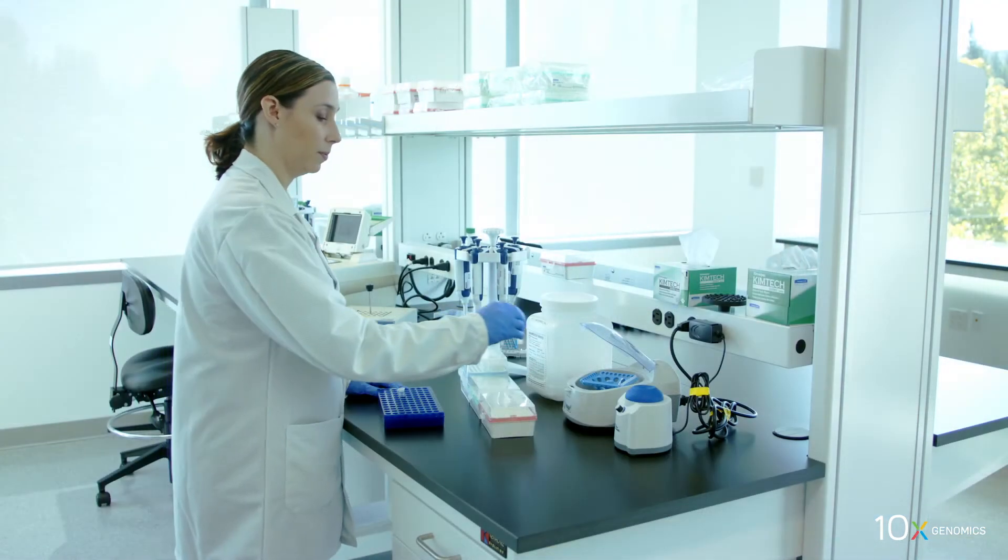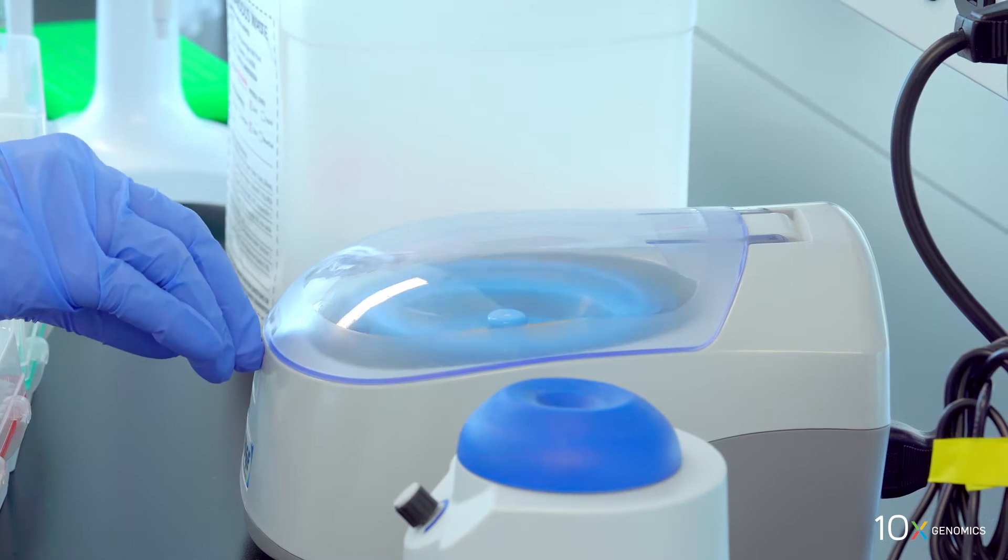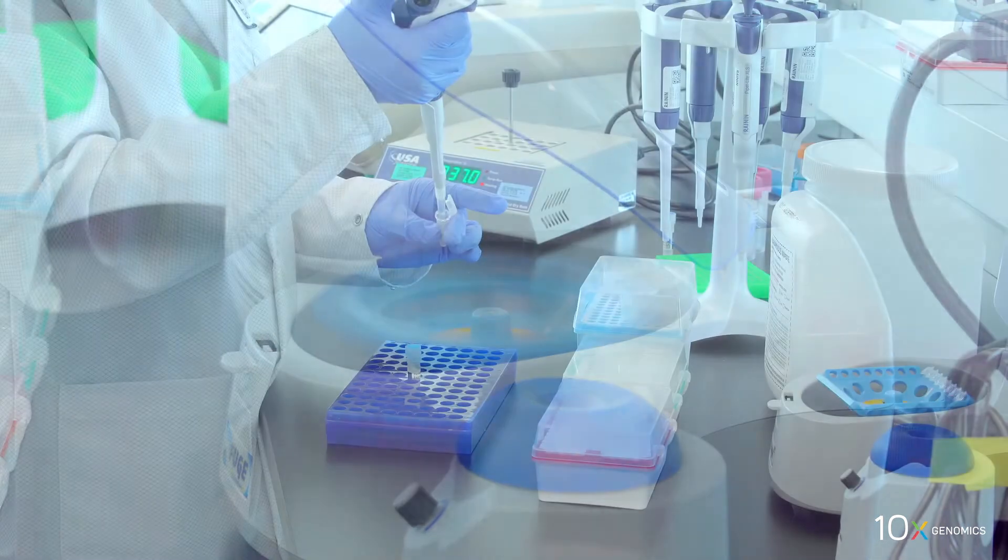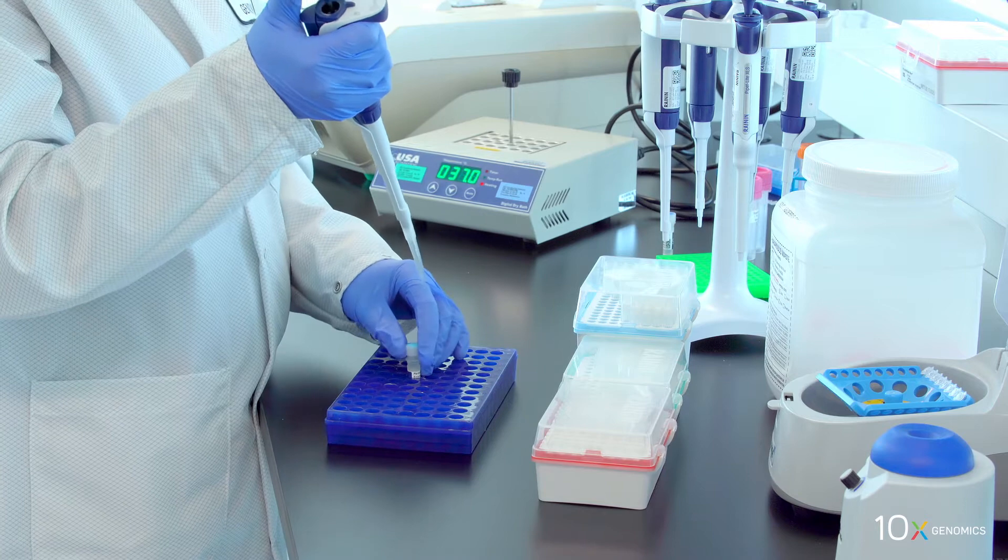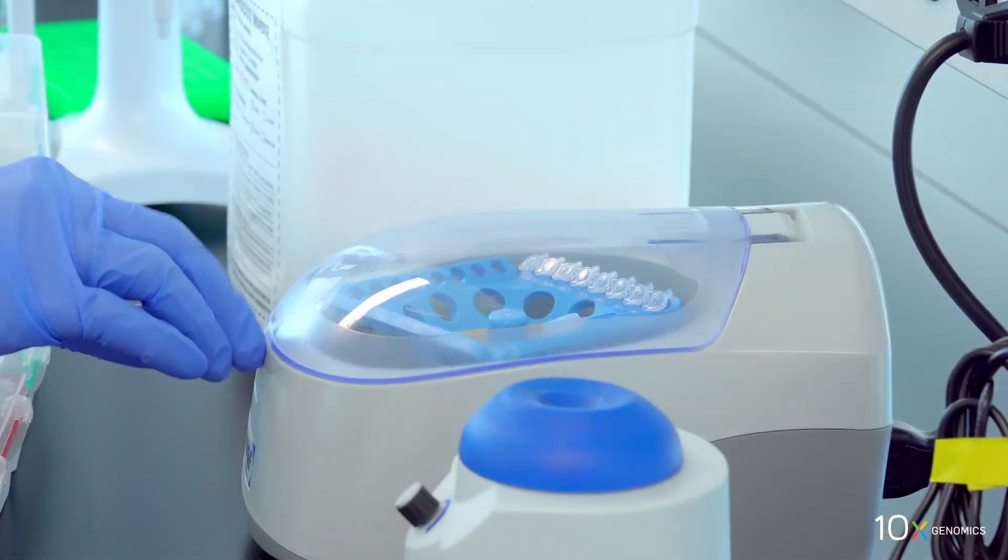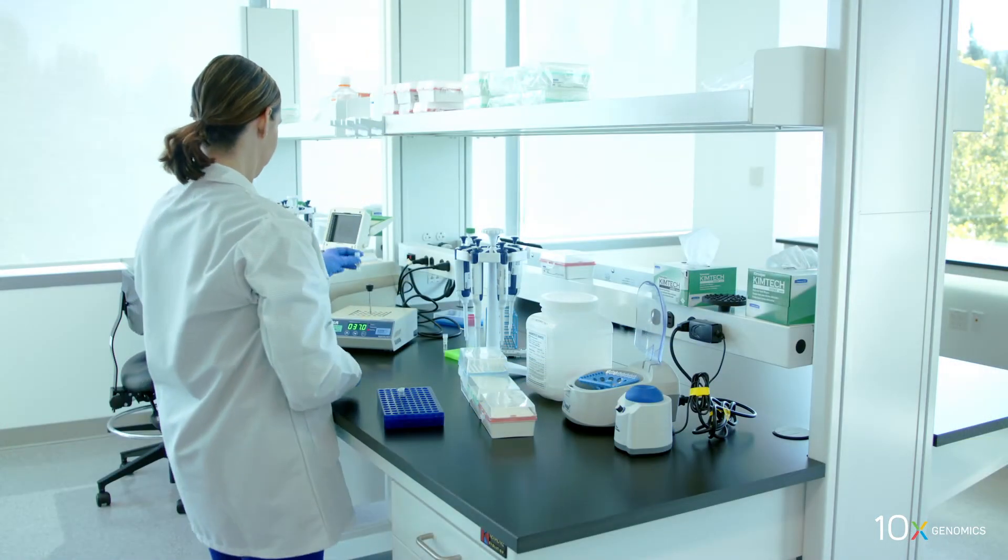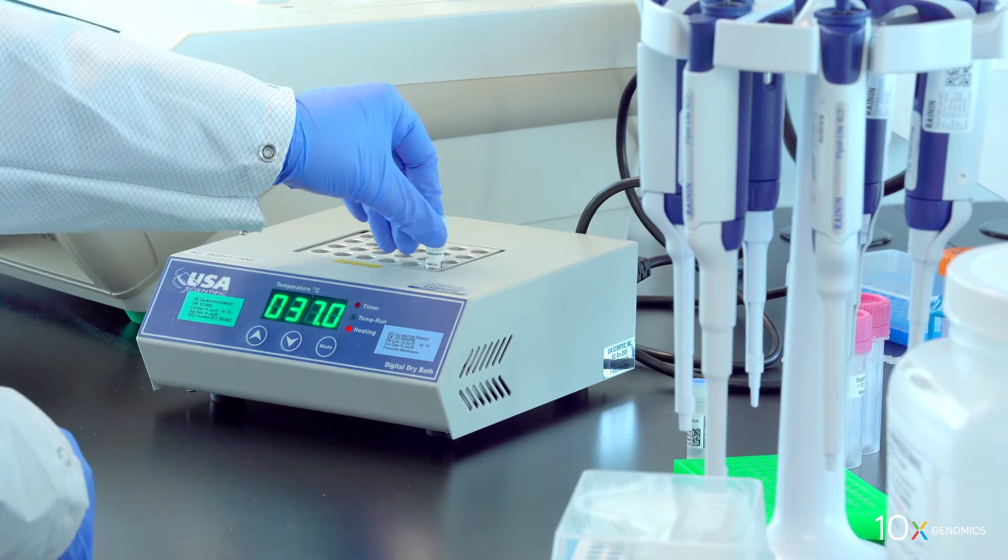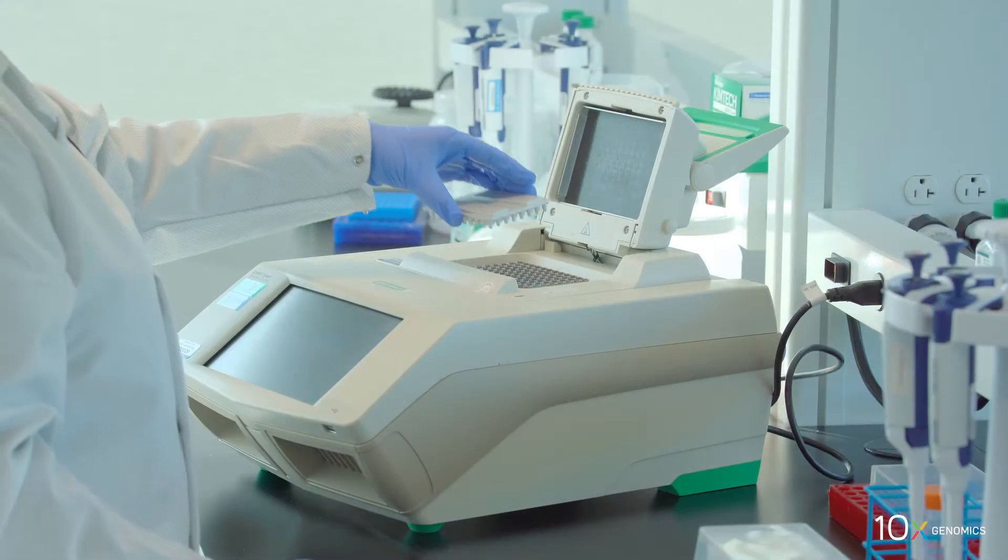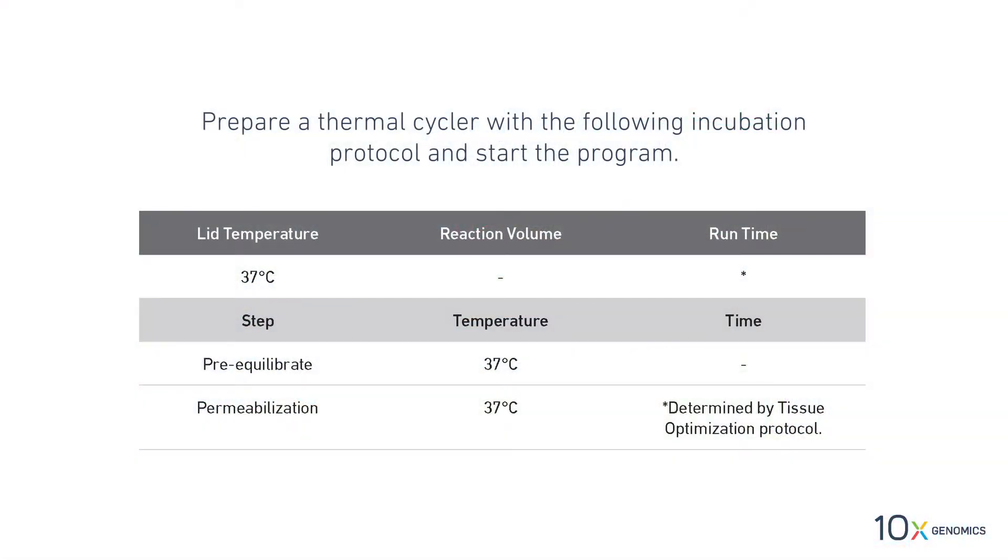We have assembled the slide cassette. Now we will permeabilize the tissue. First, we will prepare the permeabilization enzyme immediately before use. Spin down briefly, resuspend in 1.2 milliliters of HCL, pipette mix, centrifuge briefly, and verify there is no precipitate. Then equilibrate to 37 degrees Celsius.